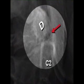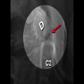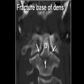This is an example of a fracture at the base of the dens. The red arrow is pointing to the horizontal lucency, which is the fracture itself. The dens, marked with a 'D', is tilted backwards slightly. This CT scan in a coronal reformatted version also shows the fracture through the base of the dens in this patient.